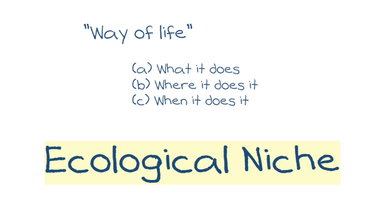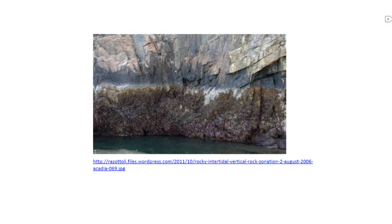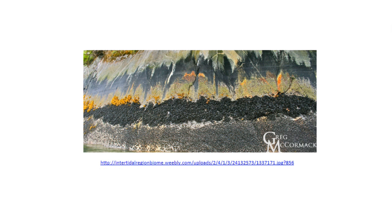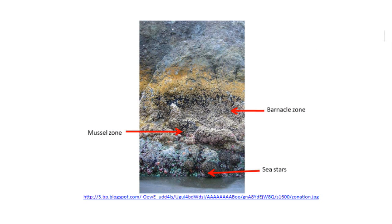The idea of ecological niche can be developed further. Consider a rocky shore such as this. We see horizontal bands across these areas, and a closer look shows that this is due to the distribution of species.